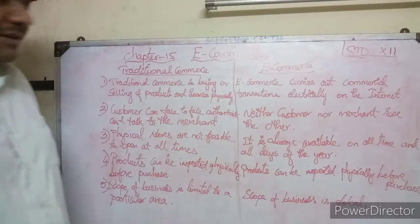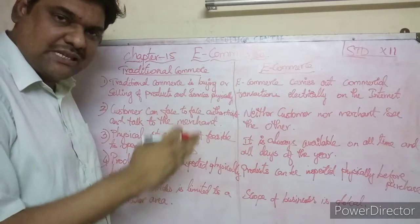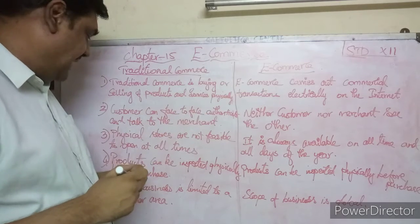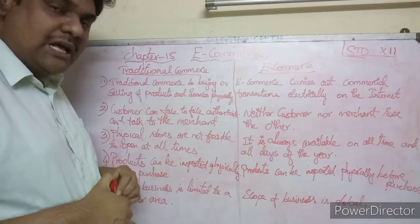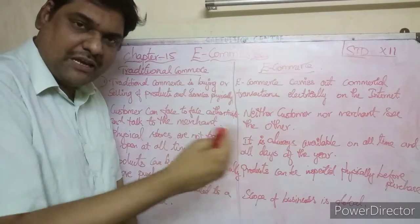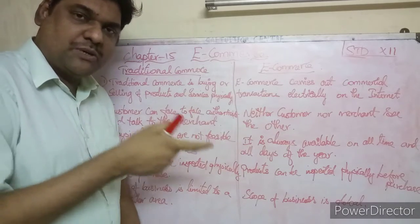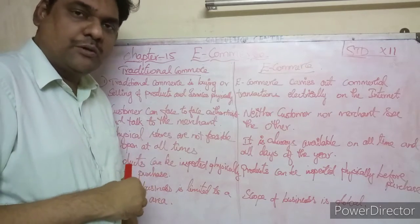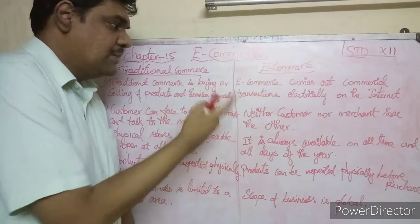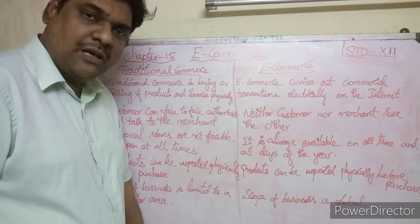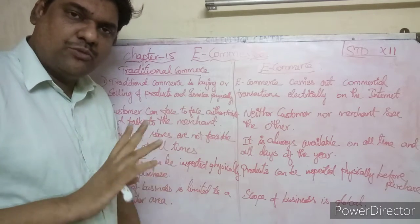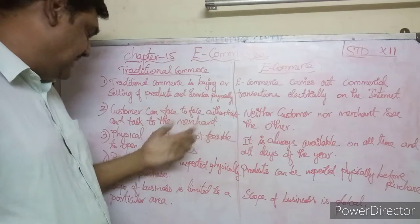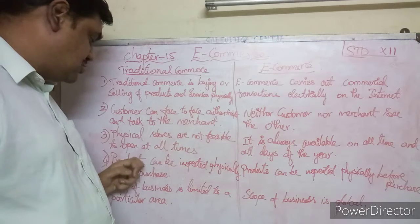In traditional commerce, customers can face to face interact and talk to the merchant. The merchant is the one who sells. But in e-commerce, neither the customer nor the merchant sees the other — they will not see each other physically; everything happens over the internet.